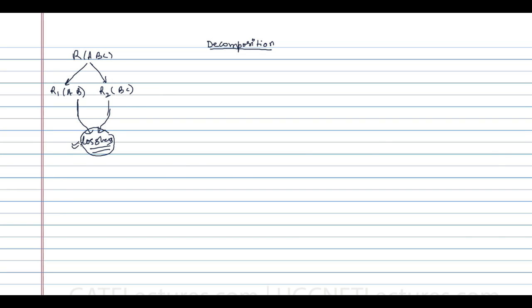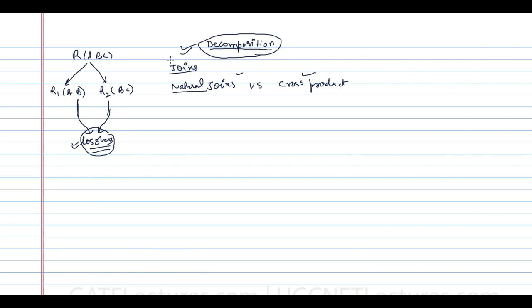We will come to the lossless decomposition point later. First, we will start with what are joins — specifically what is a natural join and what happens if you do a natural join versus a cross product. We'll start with natural join and cross product of two tables, and after understanding them, we will see what decomposition is and how you can say a decomposition is lossless or lossy.